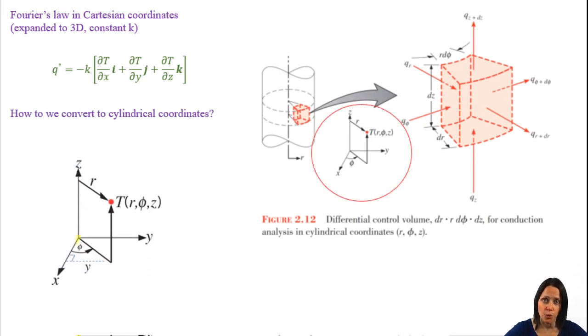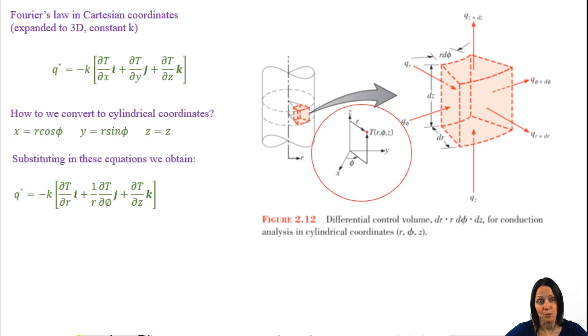We need to think back to how those cylindrical coordinates are defined. We can convert X to R cosine angle phi, where R is in the radial direction and the angle phi is in the circumferential direction. Then we can convert Y to R sine of angle phi. And of course, Z is really easy.